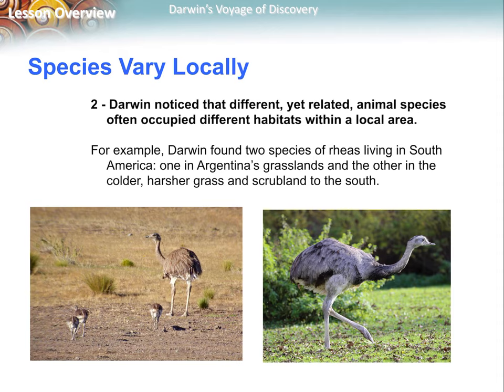He also noticed that species vary locally. Two very similar animals that look like ostriches — called rheas — live in the grasslands of Argentina. The one on the left is in more of a desert grassland, the one on the right in a more tropical grassland. These two would not be able to produce fertile offspring together — they're two separate species. In an upcoming lesson we'll talk about what defines a species and how speciation can occur, which is really interesting.